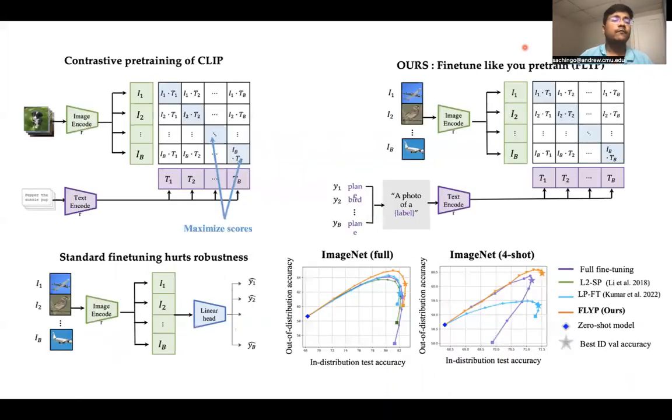In this work, we consider fine-tuning of image language models like CLIP. Specifically, it has been shown in some previous works that standard fine-tuning using cross-entropy loss hurts the distributional robustness of CLIP. In our work, we will show that simply modifying this fine-tuning procedure by using the same loss as pre-training can mitigate this issue. Specifically, given the downstream labels, we first cast them as text prompts and continue optimizing the pre-training contrastive loss. And this very simple approach gives state-of-the-art accuracies on ImageNet, Wilds, and many other tasks.